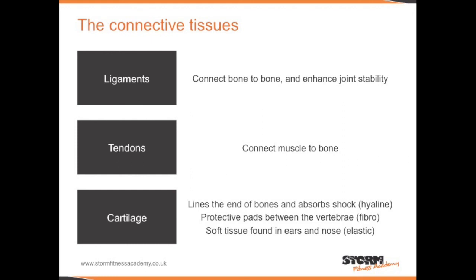The skeletal system also has 3 different types of connective tissues. Ligaments connect bone to bone and enhance joint stability. Tendons connect muscle to bone. Cartilage lines the ends of bones and absorbs shock — this is known as hyaline cartilage. It also creates protective pads between the vertebrae, known as fibrocartilage. It also makes up the soft tissues found in ears and the nose, known as elastic cartilage.